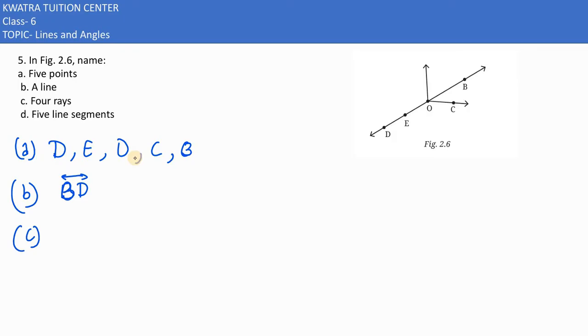In part C, we have been told 4 rays. I can clearly see OC is the starting point and our extended point is O. Then next can be OB, OD, and OE.